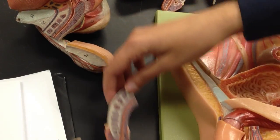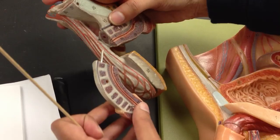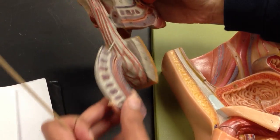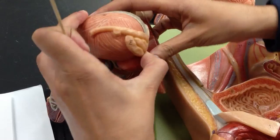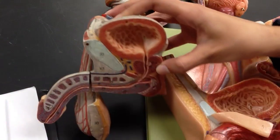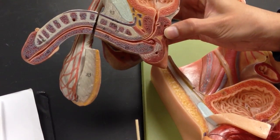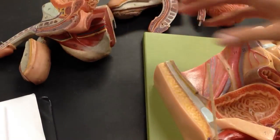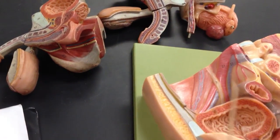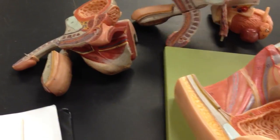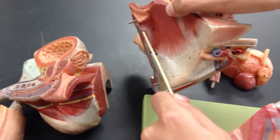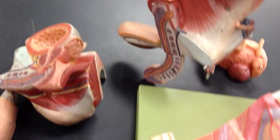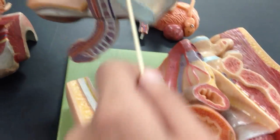The external urethral orifice... this one? External urethral orifice. That's a sphincter. This is the orifice right here. And that's a sphincter.